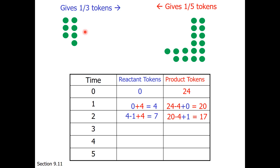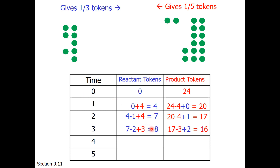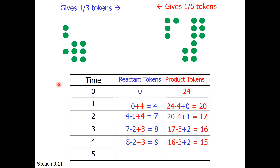One third of 7 is 2, and one fifth of 17 is 3. After that exchange — 2 forward and 3 in reverse — we are now at 8 reactant and 16 product tokens. One third of 8, rounding down, is 2 forward, and one fifth of 16 is 3 in reverse. After putting 2 tokens forward and 3 in reverse, we are now at 9 reactant and 15 product tokens.